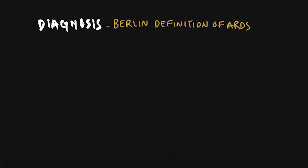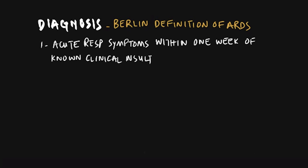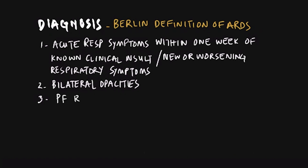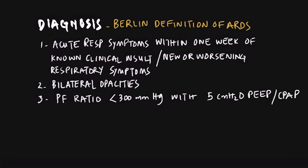To diagnose ARDS we use the Berlin definition, which includes the following criteria. First, acute respiratory symptoms with an onset within one week or less of a known clinical insult or new or worsening respiratory symptoms. Second, bilateral opacities consistent with pulmonary edema must be present and may be detected on CT or chest radiograph. Third, a PO2 to FiO2 ratio (PF ratio) less than 300 mmHg with a minimum of 5 cm water PEEP or the patient on CPAP.